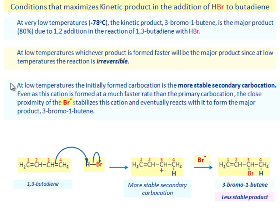At low temperatures, the initially formed carbocation is the more stable secondary carbocation. Even as this carbocation is formed at a much faster rate than the primary carbocation, the close proximity of the bromide ion stabilizes this cation and eventually reacts with it to form the major product 3-bromo-1-butene.